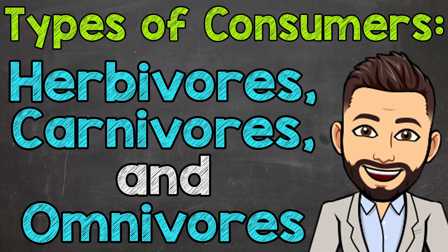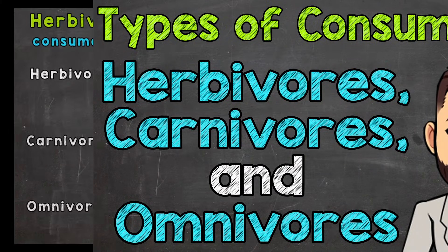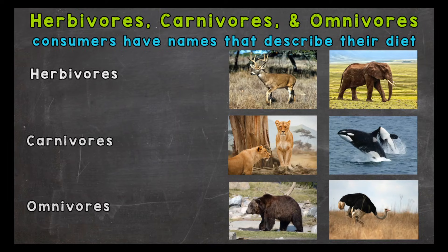Welcome to Science with Mr. J. In this video I'm going to cover different types of consumers: herbivores, carnivores, and omnivores. Consumers have names based on their diet, so we're going to go through and talk about what that means.